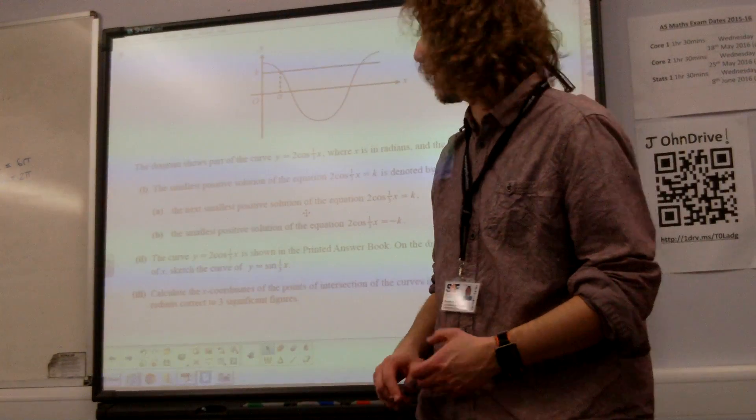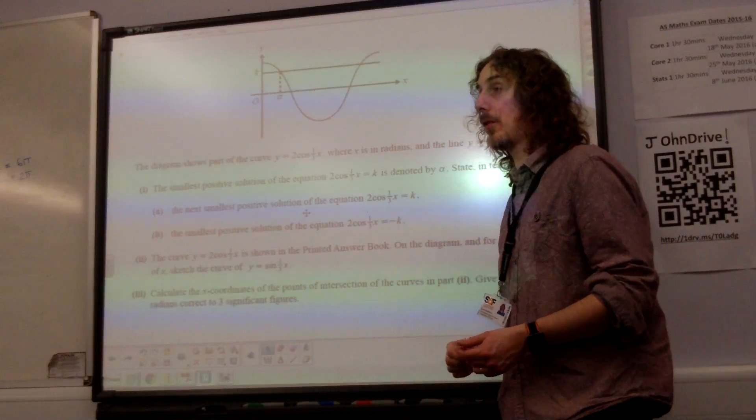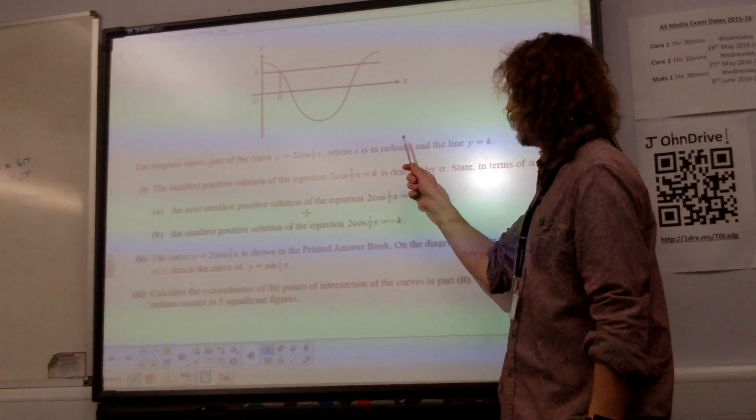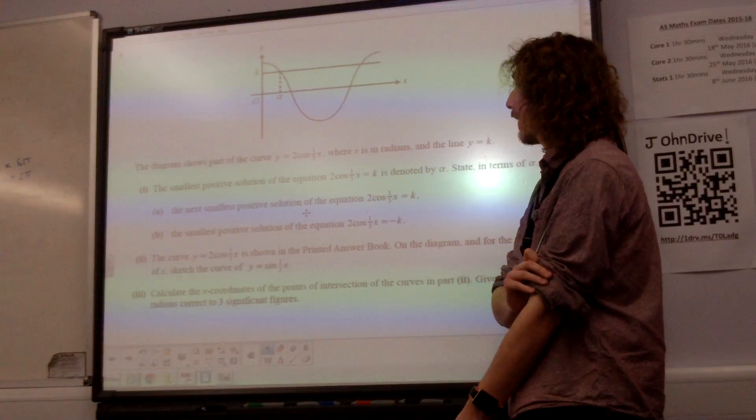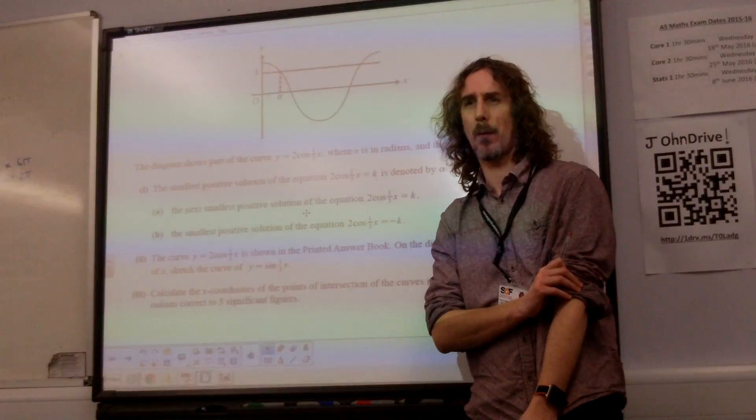So the last question, question 9. The diagram shows part of the curve 2 cos a third x, where x is in radians, and the line where it's k. Right, just a quick, let's get a quick feel for what's happening in this graph.